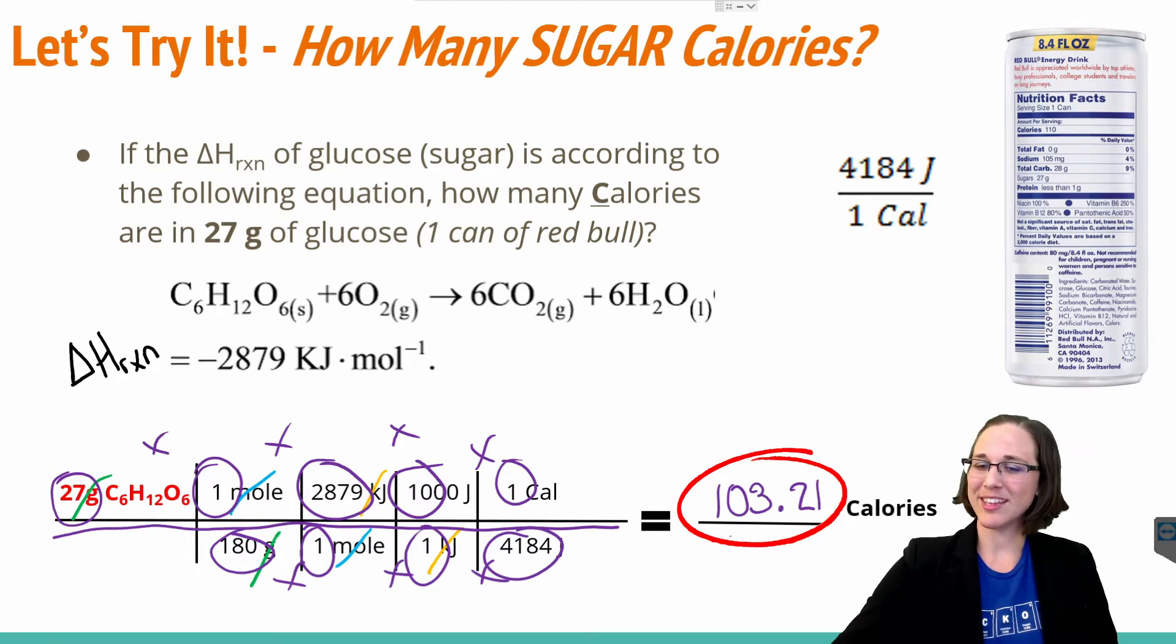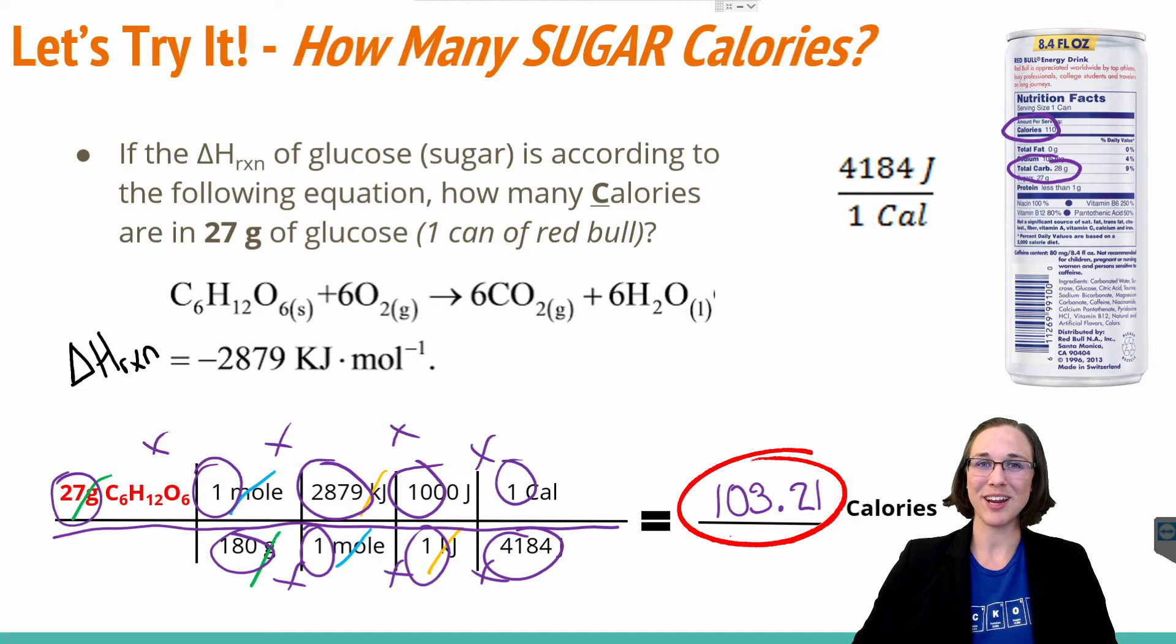Notice that the calories on the can say 110. How come there's a discrepancy? Well, turns out, as I mentioned before, energy can come from multiple sources, not just sugar. Notice there's also carbohydrates in this Red Bull. And carbohydrates are starches and get converted to usable sugar in your body through digestion.